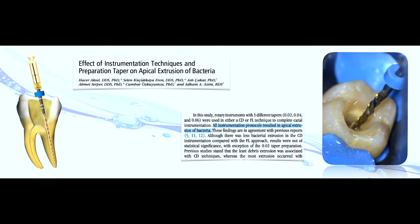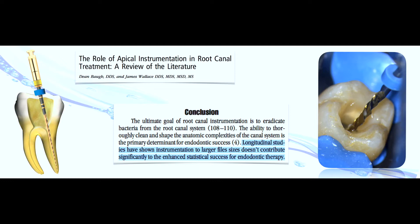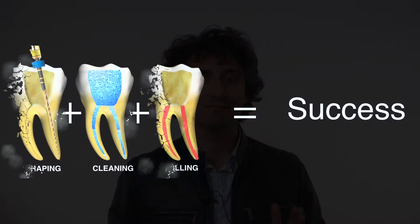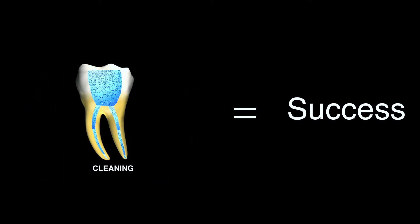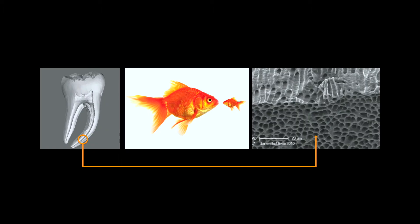We cannot trust on obturation, we cannot trust on shaping and files, because they are not designed for disinfection. Our root canal treatment, in order to reach success, is represented by shaping, cleaning, and filling — but cleaning is the most important part in order to reduce the bacteria that cause failure. So if we want to be successful, we have to clean in a proper way.